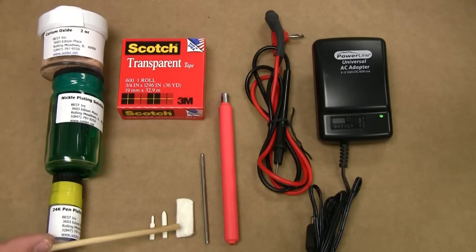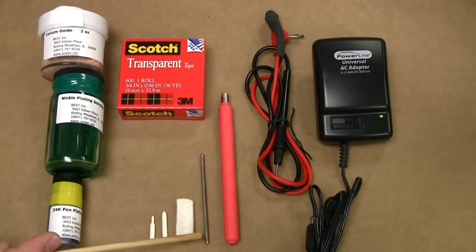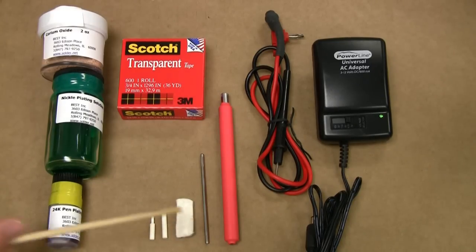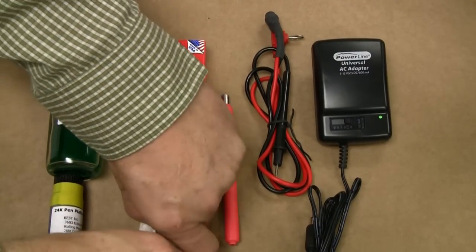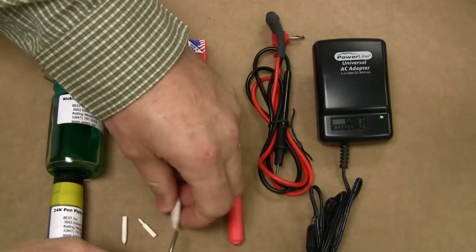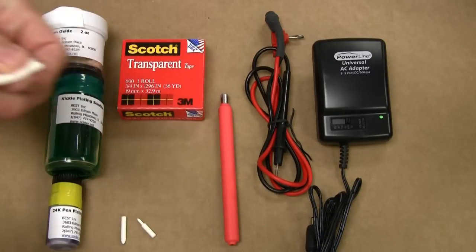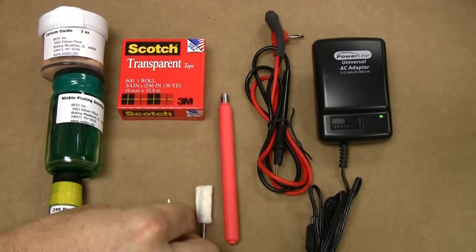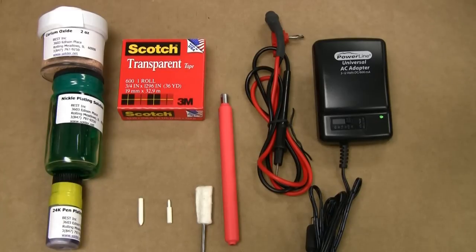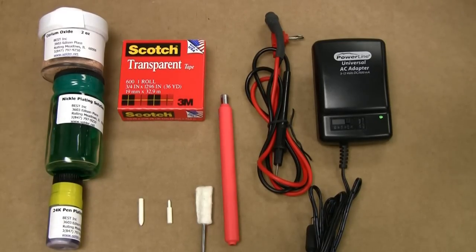And we have an applicator sleeve that you use in accordance with the plating bit. Now this would attach something like this. You would actually stick it inside the applicator, so it would look something like that. Now let's see how all this works together, shall we?